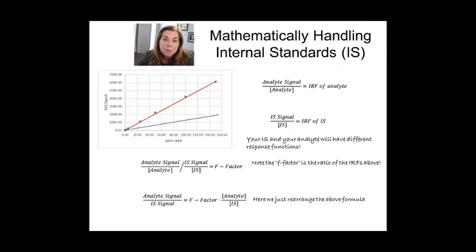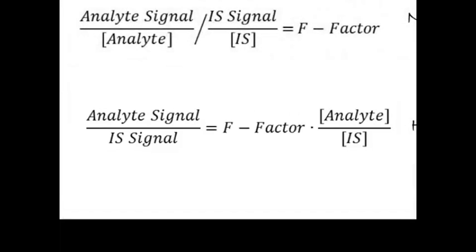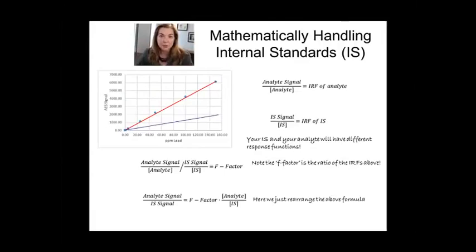This is a more typical form for seeing an internal standard calibration. And the only thing I'd point out is it looks a lot like what we've seen already. Signal is equal to a constant times the concentration. But the primary difference is the signal here is the ratio of the signal of the analyte to the internal standard. And, of course, you're going to get a ratio of the concentration of the analyte to the internal standard.